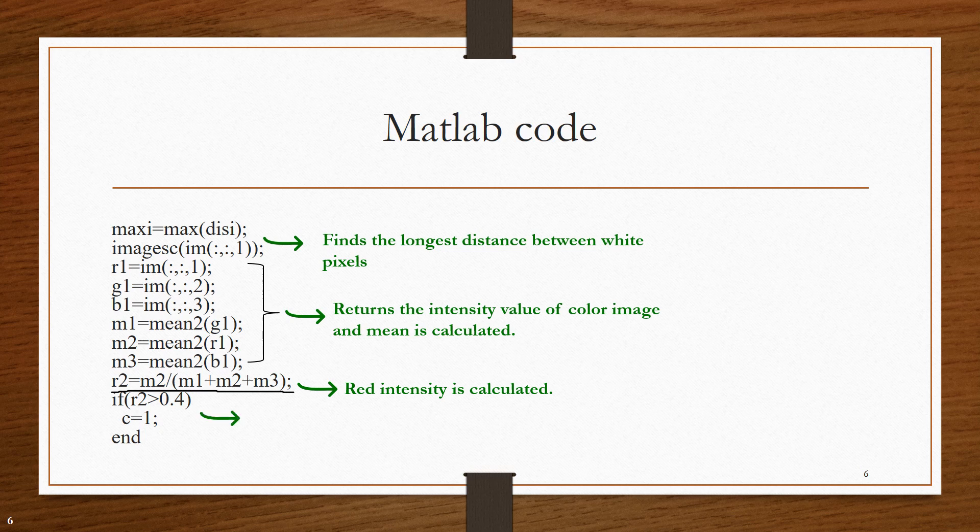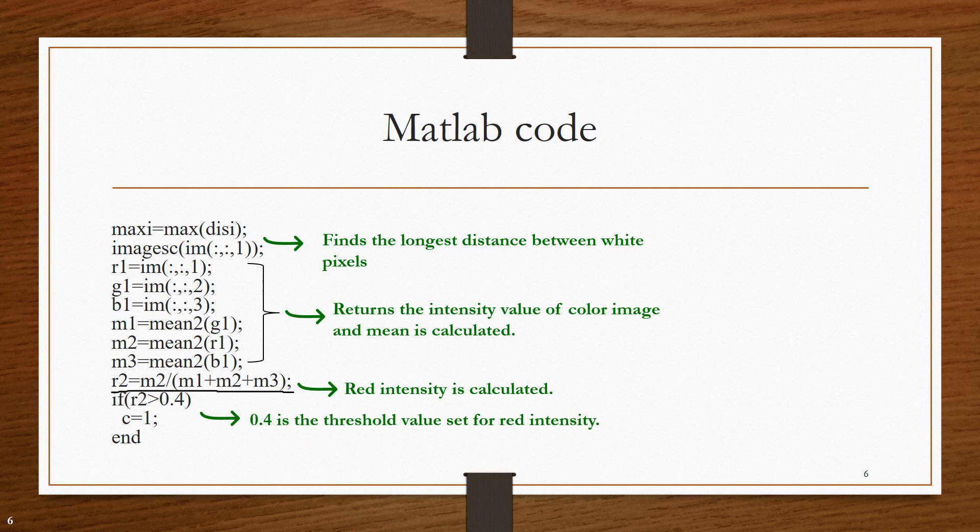Then, the threshold is being set. This threshold is set by analyzing different orange fruits. Orange fruits are tasted and if it is sweet, its red value is found and if it is sour, its value is found. And based on this value and this analysis, the threshold is being fixed.